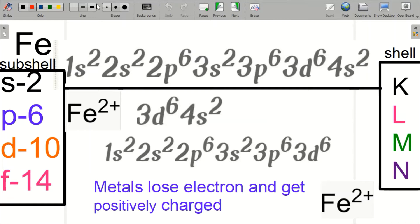As you can see here, there are two things: shells and subshells. How can you differentiate them? The shells are K, L, M, N — which you have been learning for a long time. Similarly, talking about subshells, which are introduced newly: the s subshell can hold 2 electrons, the p subshell can hold 6 electrons, the d subshell can hold 10 electrons, and the f subshell can hold 14 electrons in total.